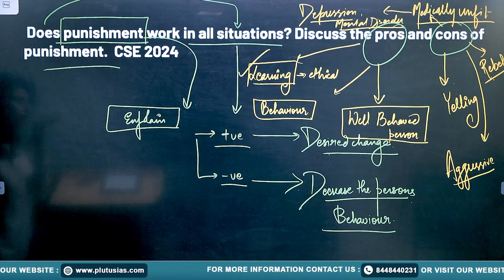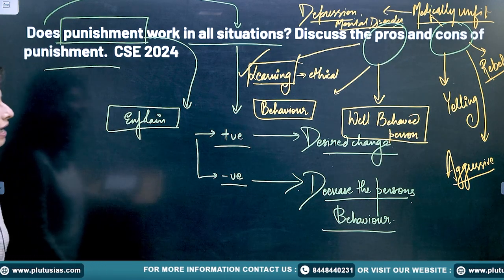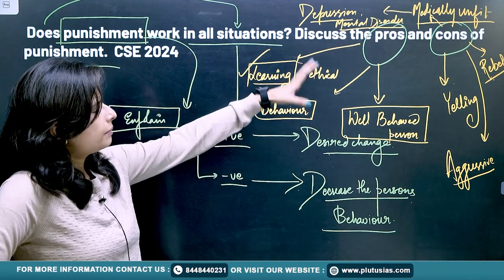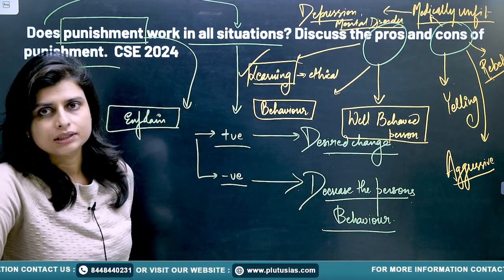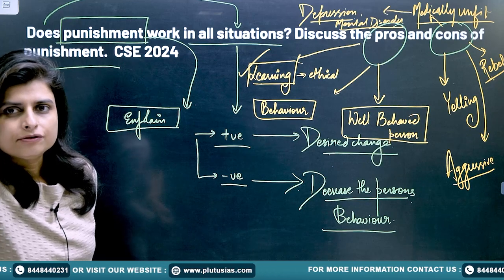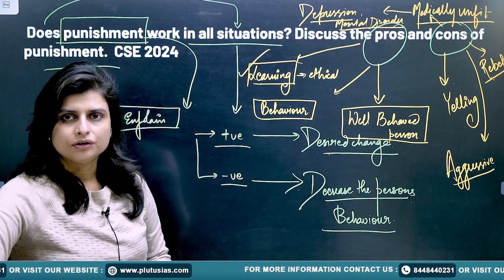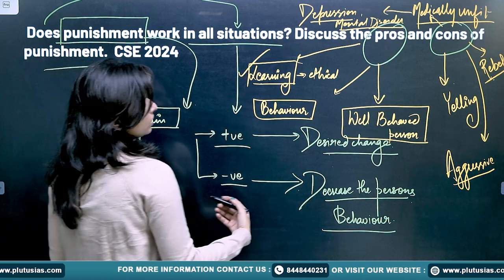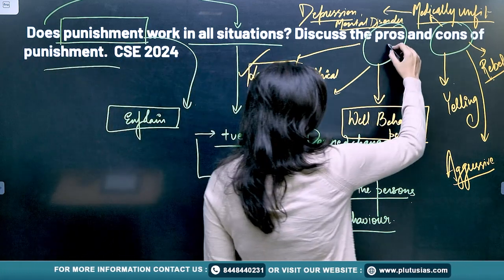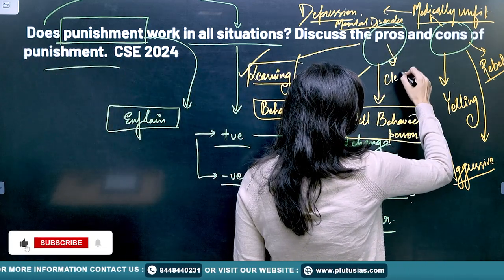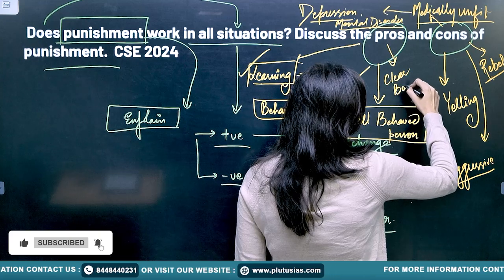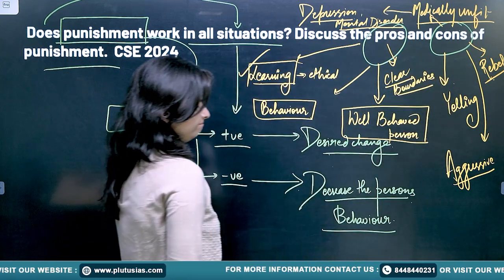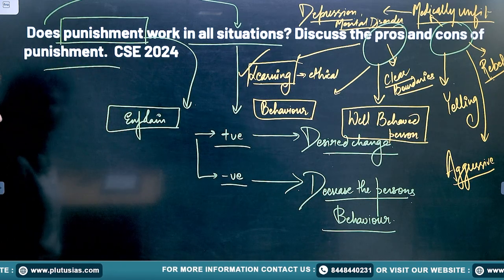There are certain pros and certain cons of punishment. You have to tell about all the repercussions that are going to happen. You also have to tell about the pros — because if children are not punished for wrong habits, they will never know about their boundaries. So the pros are very important: children should know about their boundaries.